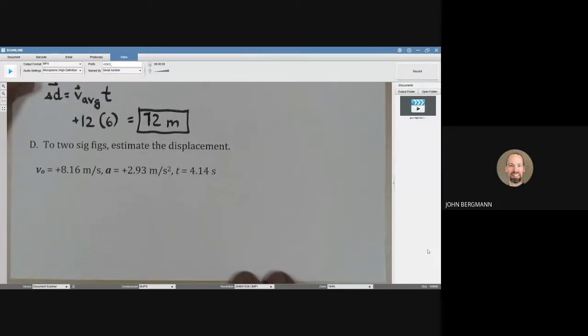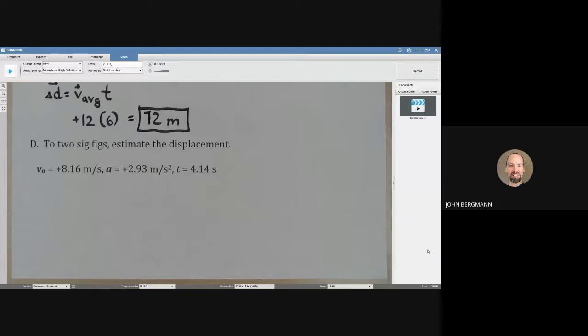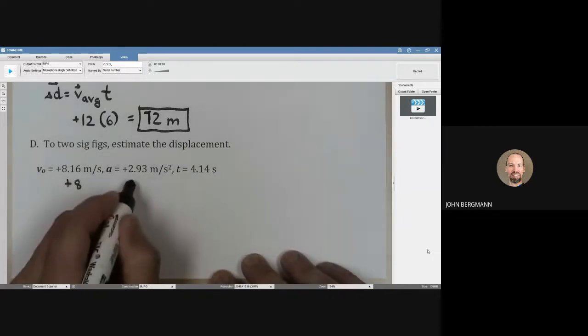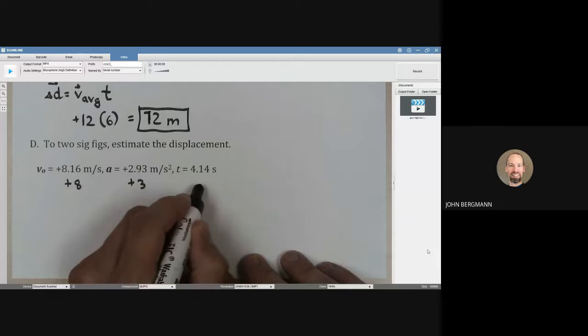Now this skill comes in really handy if, for example, you're taking the national AP exam. They might give you a multiple choice problem where they give you numbers like this. To actually type it all in is going to eat into your time, so it's best if you're able to just estimate it. Let's try this. This is about positive 8 and this is about positive 3 and this is about 4 seconds.